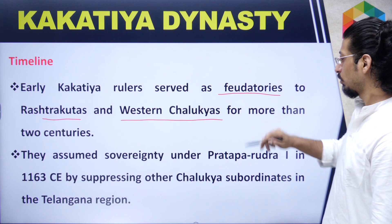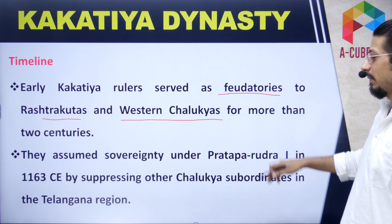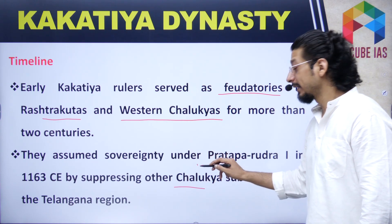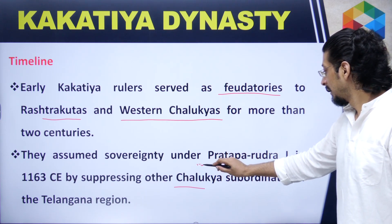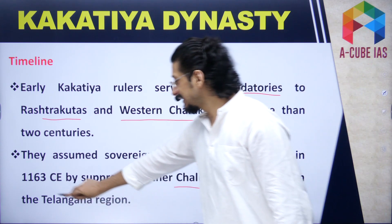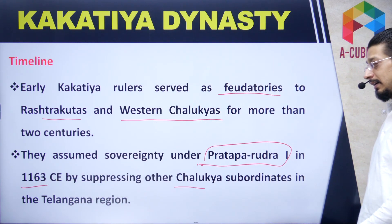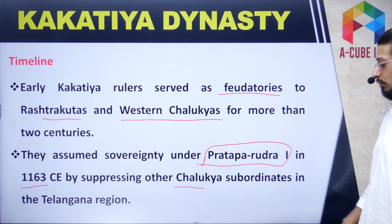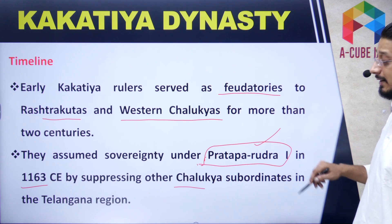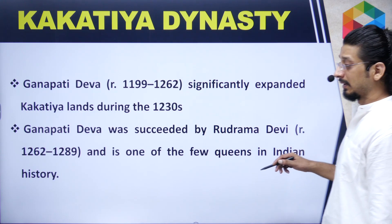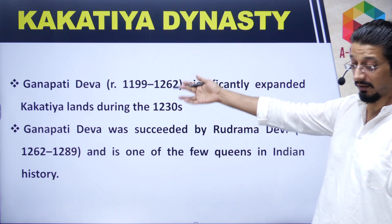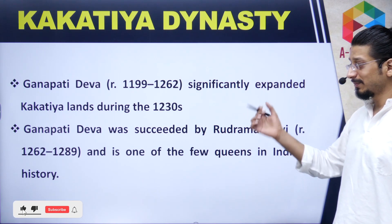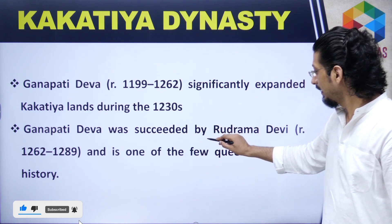After that, they defeated the Chalukyas. Their first major ruler is considered Pratap Rudra. In 1163 AD he defeated the Chalukyas in that area, and from Pratap Rudra the Kakatiya dynasty's major phase began. Then during Ganpati Deva's tenure the construction of the Ramappa Temple was started — his general Recharla Rudra Reddi began the temple construction. Under Ganpati Deva the empire expanded greatly. Ganpati Deva was succeeded by Rudrama Devi.